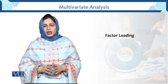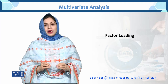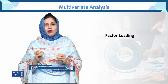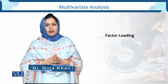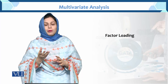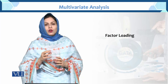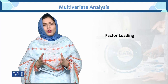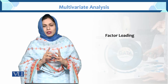Dear student, today we are going to learn factor loading. Factor loading is the correlation between the factors and the items. If it is 0.7 correlation, you can say that there is a high correlation between the factor and the item. And if it is 0.3 correlation, you can say that we have the moderate correlation between the factor and the item. This is the concept of factor loading.